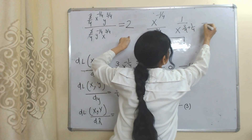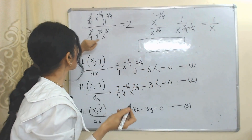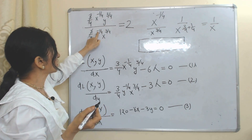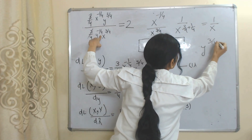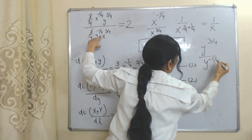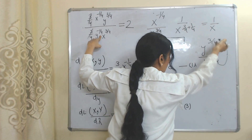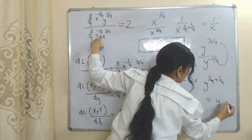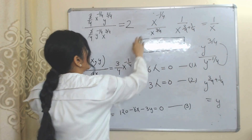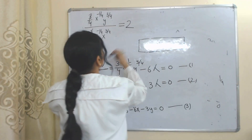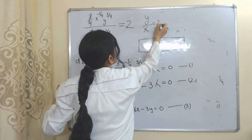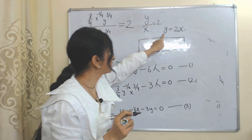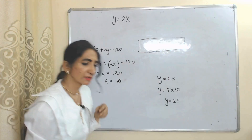When we solve that, it becomes equal to x. Similarly, we divide y to the power 3/4 by y to the power minus 1/4 — the negative power comes above. When we solve that, it becomes equal to y. After dividing, the result becomes y equal to 2x.